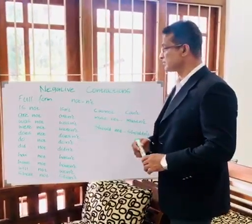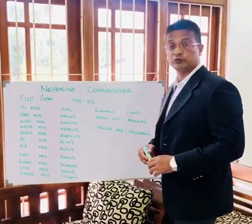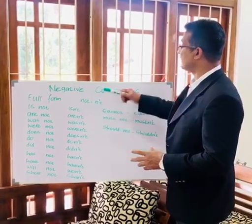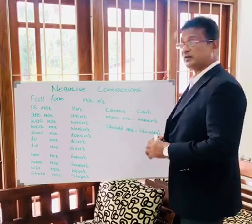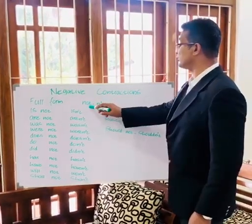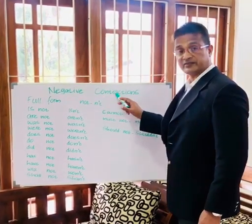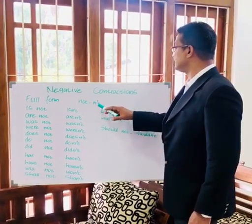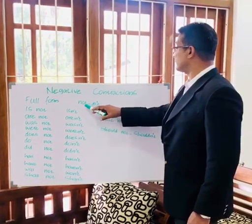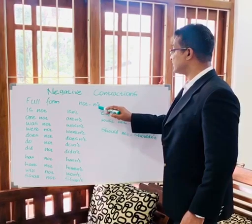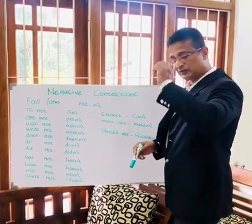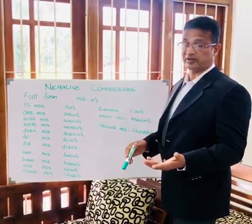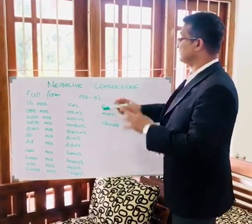Hi children, I'm back with a lesson on negative contractions. In my previous lessons I talked to you about the positive contractions, and now I'm going to talk about the negatives as well. The specific thing to know is that negative contractions are made by shortening 'not' and adding an apostrophe T. This is the only specific feature you have to know when you convert contractions into the negatives.